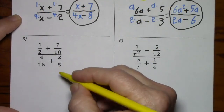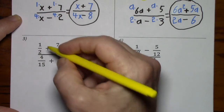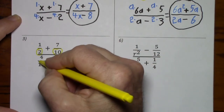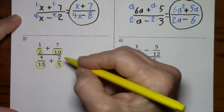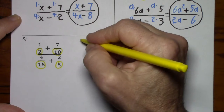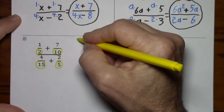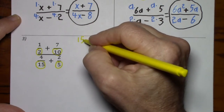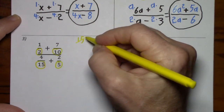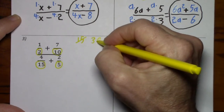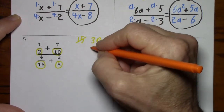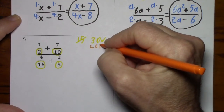Looking at this one, we'll focus on just the denominators. So we have a 2, a 10, 15, and a 5 to be concerned with. We'll look at multiples of the biggest. 15 doesn't work, 10 won't fit, 2 won't fit. But when we get to 30, that works fine. So 30 is our least common denominator.